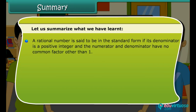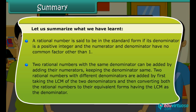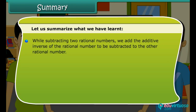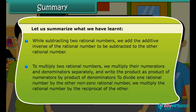A rational number is said to be in the standard form if its denominator is a positive integer and the numerator and denominator have no common factor other than 1. Two rational numbers with the same denominator can be added by adding their numerators and keeping the denominator the same. Two rational numbers with different denominators are added by first taking the LCM of the two denominators and then converting both rational numbers to their equivalent forms having the LCM as the denominator. While subtracting two rational numbers, we add the additive inverse of the rational number to be subtracted to the other rational number. To multiply two rational numbers, we multiply their numerators and denominators separately and write the product as product of numerators by product of denominators. To divide one rational number by another non-zero rational number, we multiply the rational number by the reciprocal of the other.